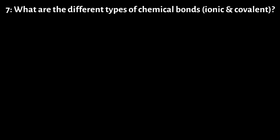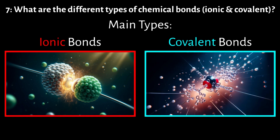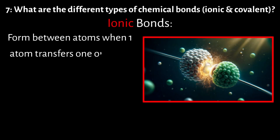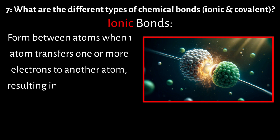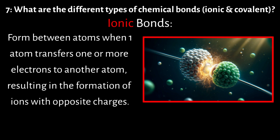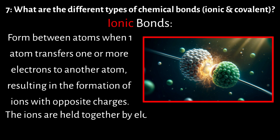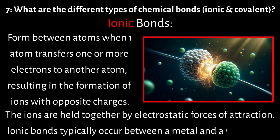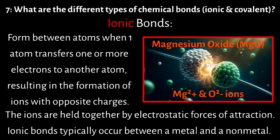Number 7: What are the main types of chemical bonds? The main types of chemical bonds are ionic and covalent bonds. Ionic bonds form between atoms when one atom transfers one or more electrons to another atom, resulting in the formation of ions with opposite charges. These ions are held together by electrostatic forces of attraction. Ionic bonds typically occur between a metal and a nonmetal. For example, with magnesium oxide (MgO), magnesium transfers two electrons to oxygen to form Mg2+ and O2- ions, which combine to form the ionic compound magnesium oxide.